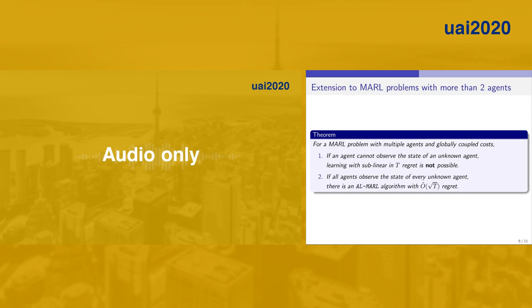Furthermore, when all agents observe the state of every unknown agent, we can propose an ALMAR algorithm with Õ(√T) regret.